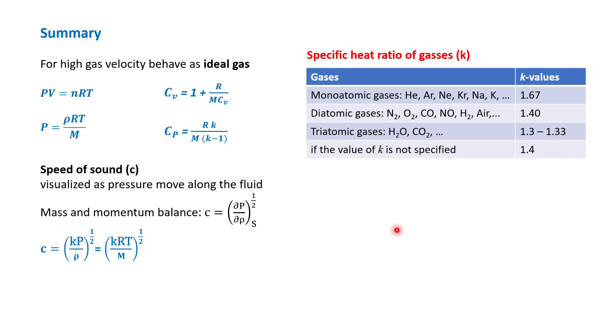We know that in this chapter, we will assume the behavior of gas following the ideal gas. So here's the summary of the equation of states, the relationship between Cv to the universal gas constant and the molar mass of the gas, and also the Cp to the specific heat ratios and the molar mass of the gas.